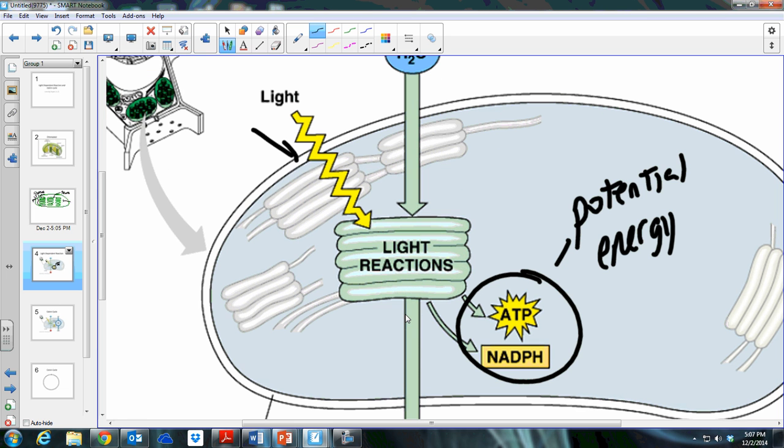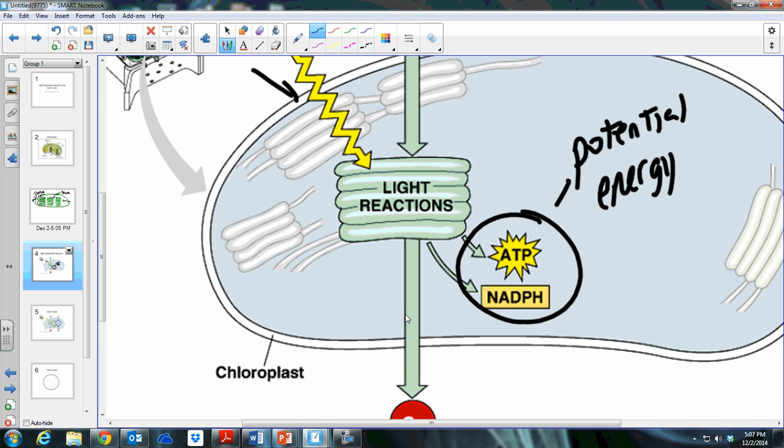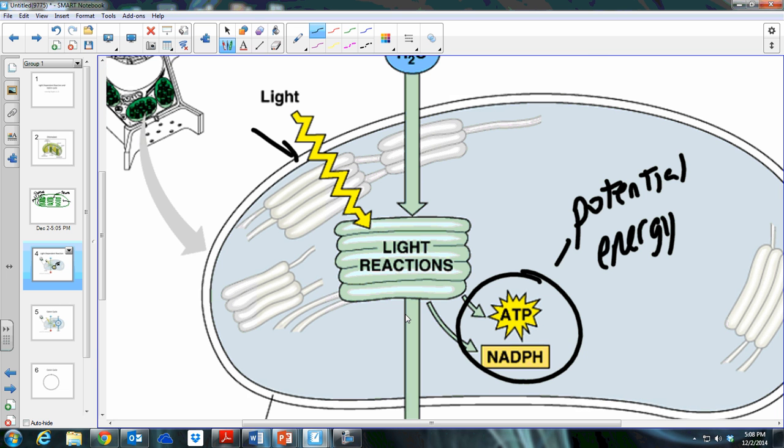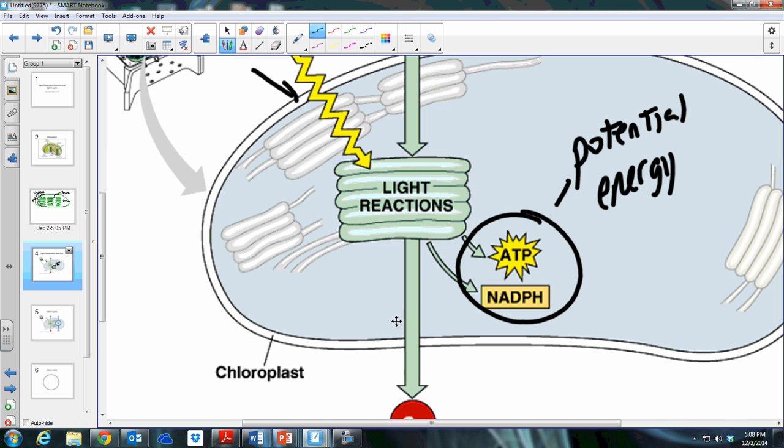A plant cannot take sunlight directly and do anything with it. It can't consume light. It doesn't speak in light terms, so it needs to convert that energy into a substance that it recognizes, which is chemicals. An organism is basically a bunch of chemical reactions, and so this light is converted into chemical energy by the pigments located on the thylakoid membrane.